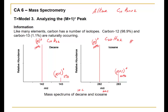The equation looks like this: the number of carbons equals the percent of the M plus 1 peak divided by the abundance of the C-13 isotope. So for icosane, 22 percent divided by 1.1 percent is equivalent to 20 carbons.